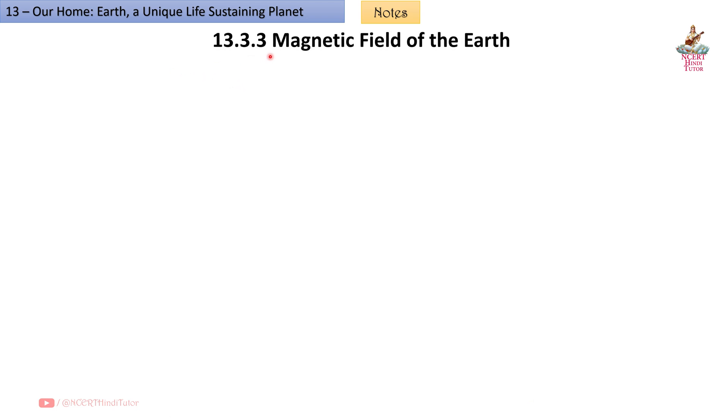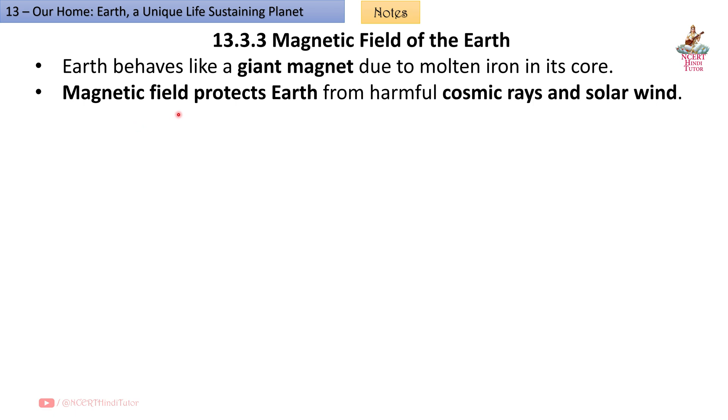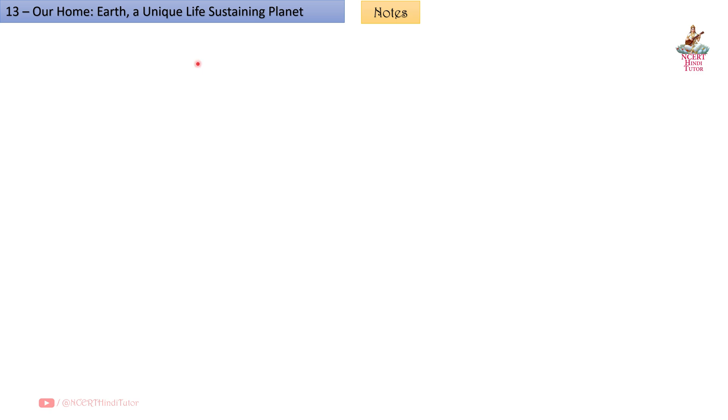13.3.3 Magnetic field of the Earth: Earth behaves like a giant magnet due to molten iron in its core. The magnetic field protects Earth from harmful cosmic rays and solar wind, prevents atmosphere from being stripped away, and is essential for sustaining life.